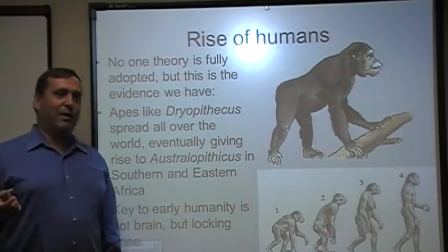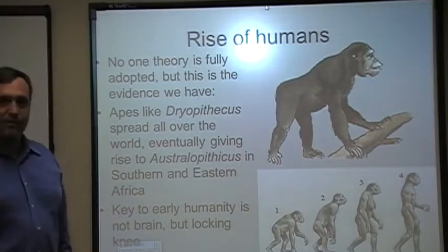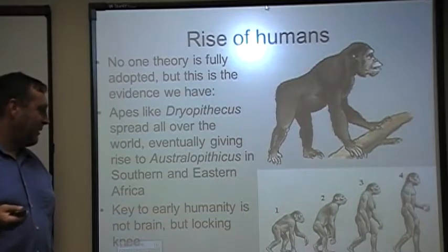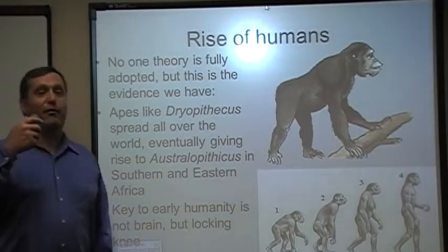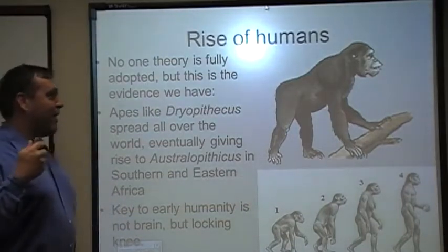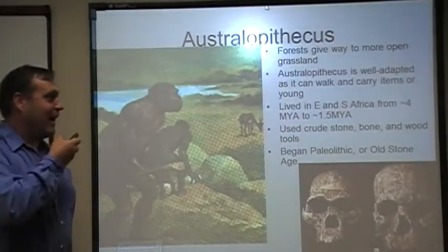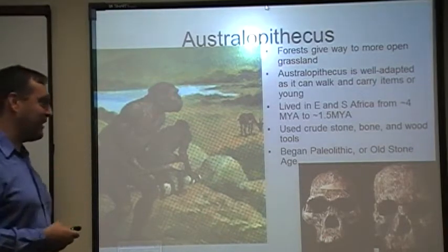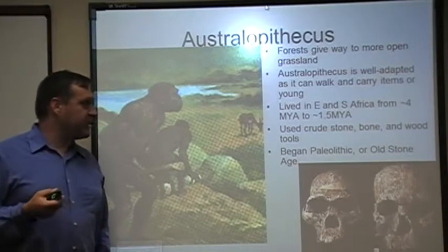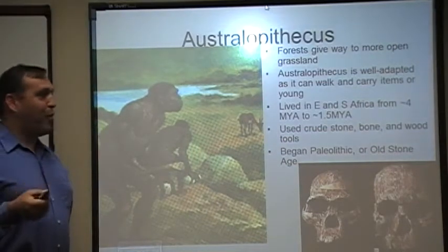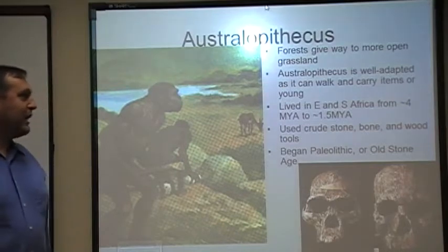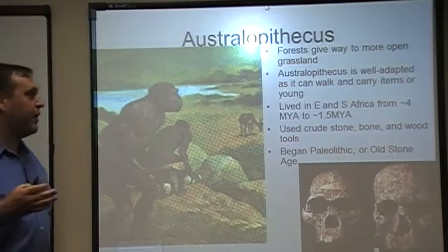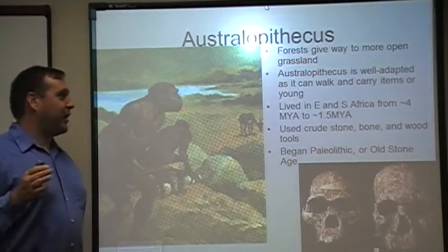A lot of people in the anthropology and bioscientific fields point to not the development of the human brain, but to the locking knee for physical development. Now for us, when we talk about the rise of civilization, we're actually much more interested in the brain as far as development. When we talk about technology, we've got to talk about Australopithecus. The forests eventually give way to much more open grassland across several millennia, whether we're talking about 4 million years ago until about 1.5 million years ago or so.